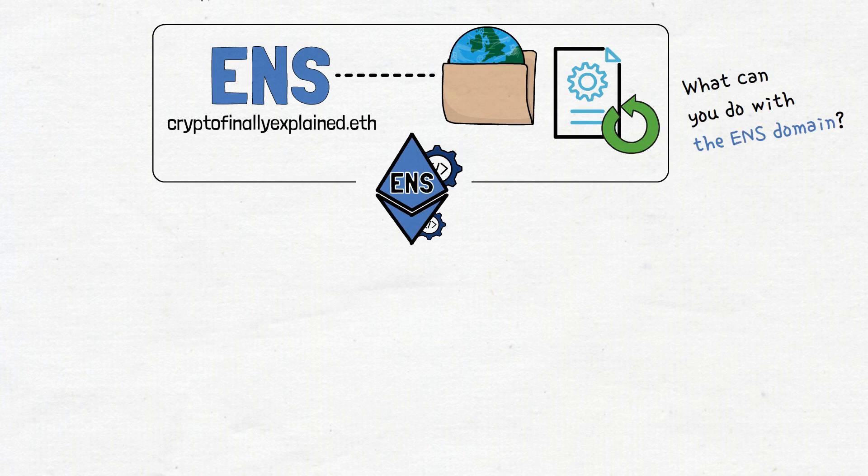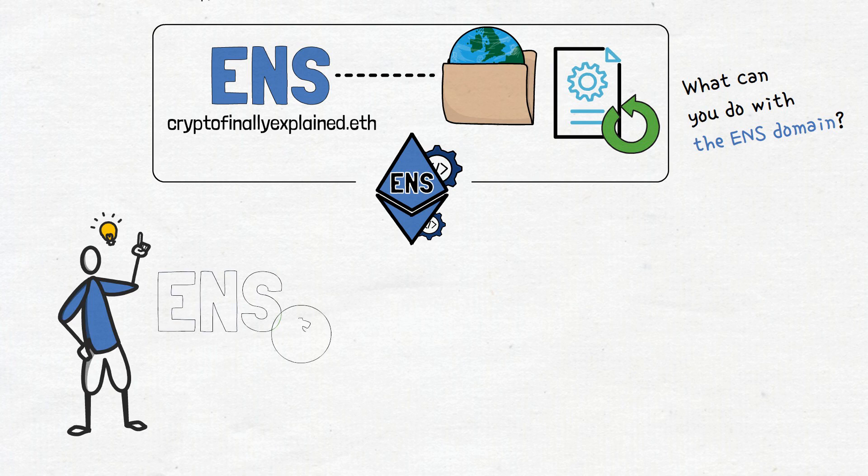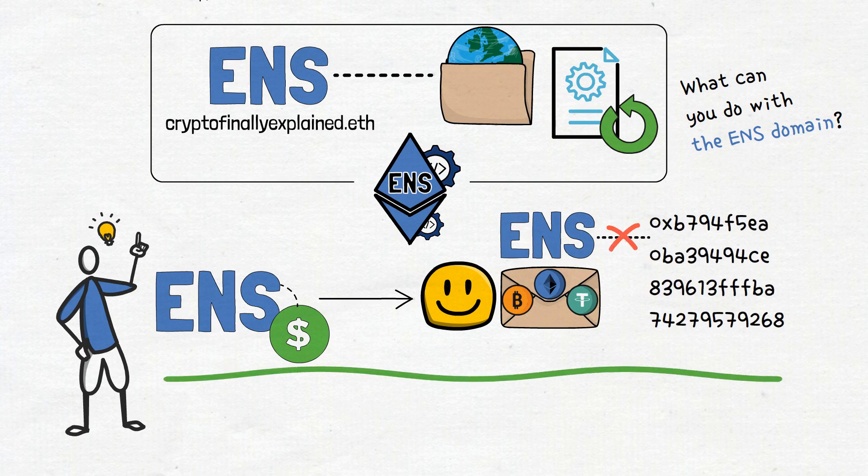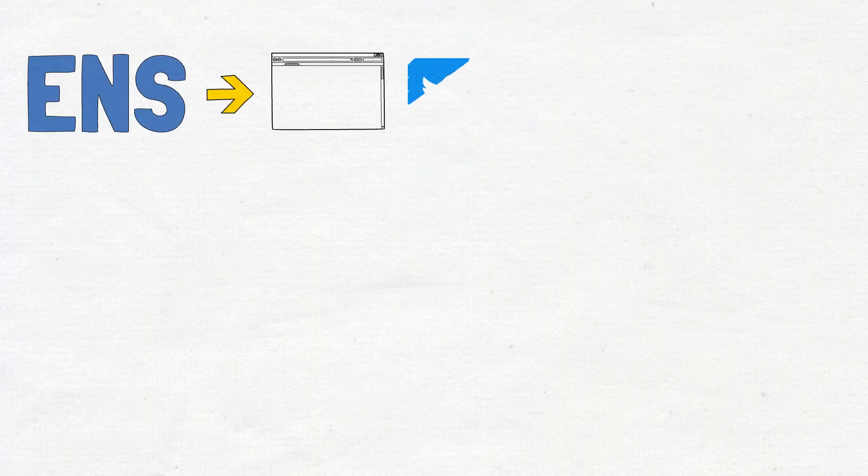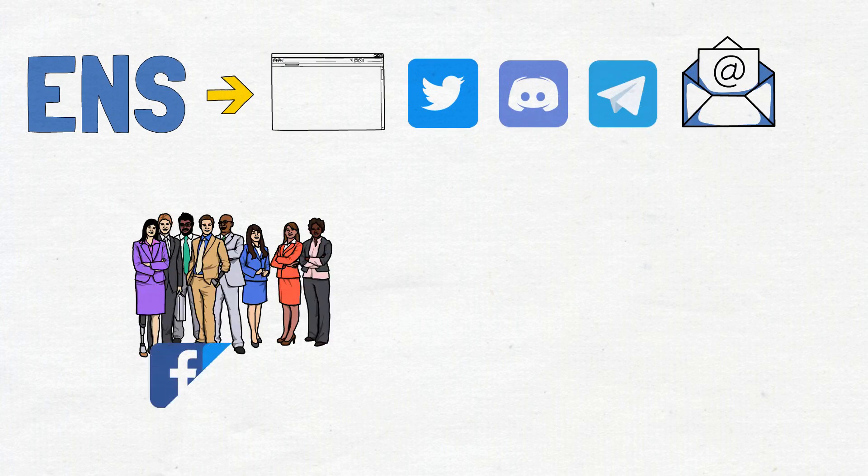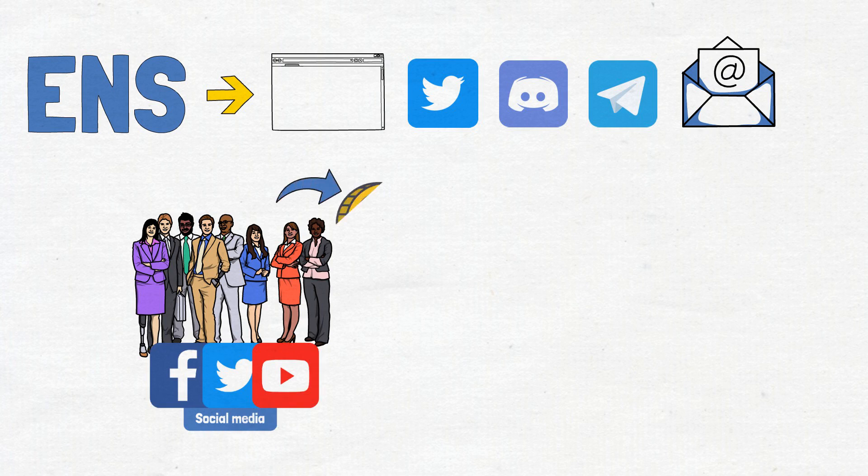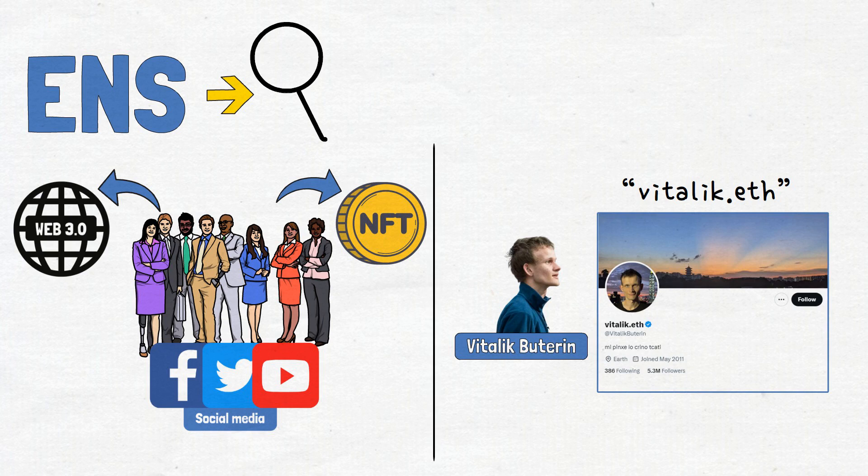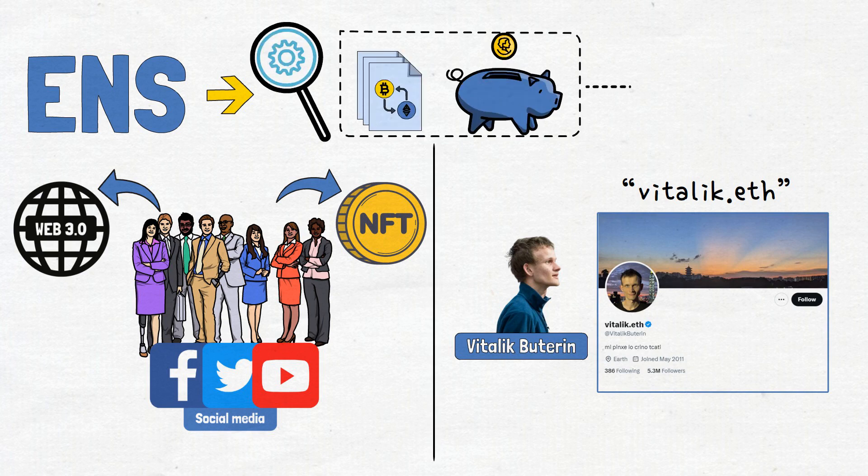So, what can you do with the ENS domain? Well, it is most likely that you bought the domain to ease the process of someone sending you cryptocurrencies, as with ENS, they no longer need to write long and complex addresses. However, apart from the most useful use case, there are plenty more. The ENS domain can be used as a website URL, Twitter profile name, Discord or Telegram handle, and even email address. People usually use ENS domains as their social media handles, to show their involvement in the NFT and Web3 spaces. A good example is Ethereum co-founder Vitalik Buterin, who uses Vitalik.eth as his Twitter handle. By using ENS domain names, users can also inspect transactions and holdings of the Ethereum wallet linked to that domain, allowing them to be true detectives.